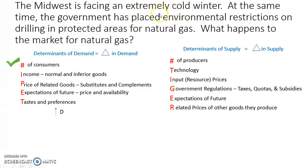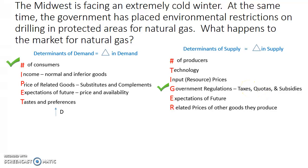The second part says that the government has placed environmental restrictions on drilling in protected areas for natural gas. When we talk about the government, we get into government regulations. They are limiting or restricting drilling — that's an example of a quota. So the determinant of supply is government regulations, and because they're restricting the amount that can be produced, this would be a decrease in supply.